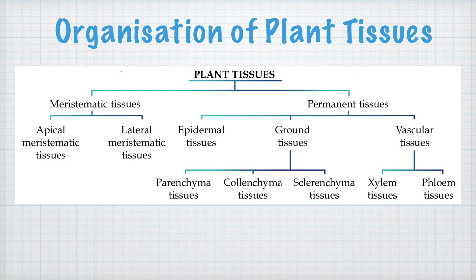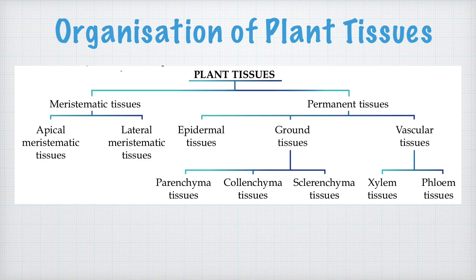Plant tissues can be divided into two big groups: meristematic tissue and permanent tissues. Meristematic tissues can be further divided into apical meristematic tissues and lateral meristematic tissues. Permanent tissues can be divided into three types: epidermal tissue, ground tissue, and vascular tissues. Ground tissues can be further divided into parenchyma, colenchyma, and sclerenchyma tissues. Vascular tissues can be divided into xylem and phloem tissues. Today we concentrate on ground tissues and vascular tissues.